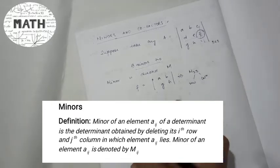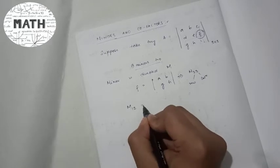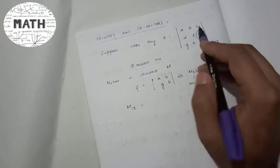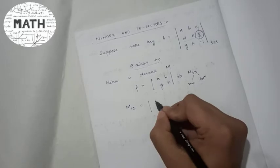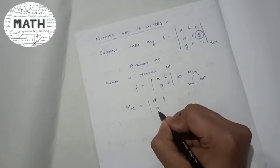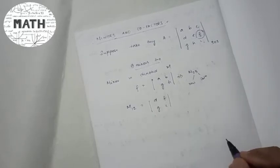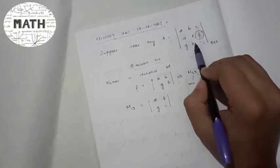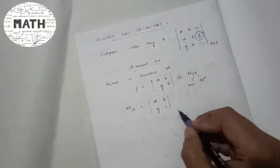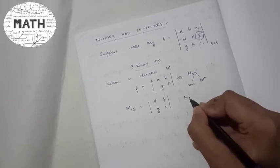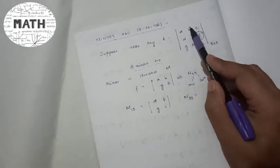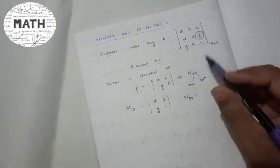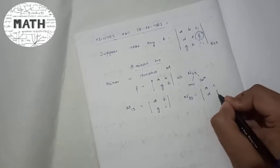Let us find different minors. Suppose I say find M₁₂ — that means the first row and the second column are removed. What is left is d, f, g, i. Similarly, if I tell you to find M₃₂, that means the third row and the second column are removed. What is left is a, c, d, f.